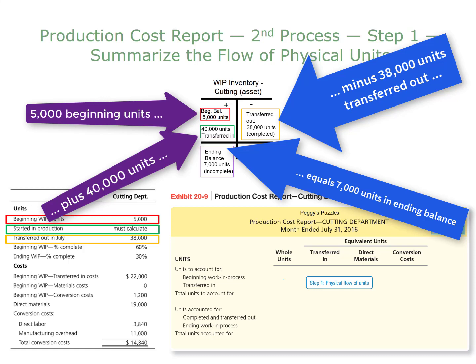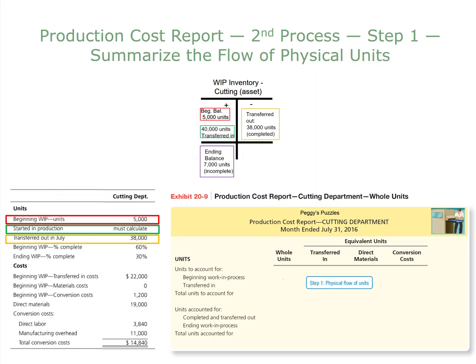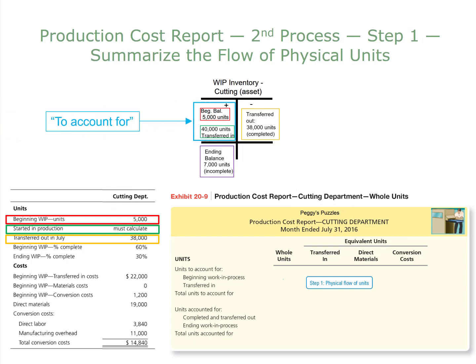Remember, they are still in process at the end of the period because they are incomplete units — maybe they were cut, but not yet put into the puzzle boxes. So the units to account for are the 5,000 units in beginning work in process, plus the 40,000 units that transferred in from the previous process, giving us a total of 45,000 puzzles to account for.